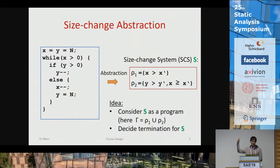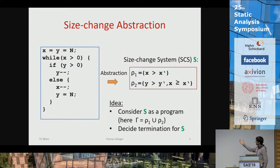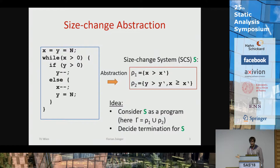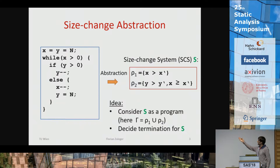This gives a quadratic iteration pattern. The idea of size change abstraction is that we abstract this program. On the right you can see this program which has two transitions corresponding to the if-branch and the else-branch of the loop. In one branch, the variable x decreases — we use x-prime to denote the next state — and we forget about y. In the other branch, y decreases and x at least does not increase.